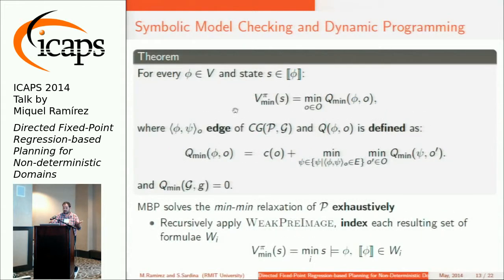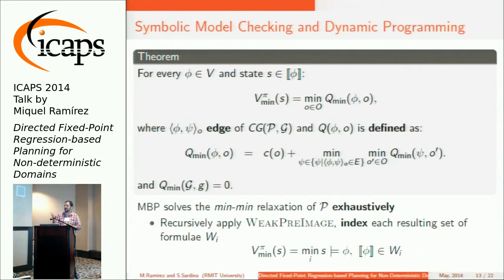Since we can relate paths to the models of the formulas, we can see that every time we apply the weak pre-image operator in MVP, counting how many applications we have done, we are actually computing the value of the min-min relaxation for a large number of states.